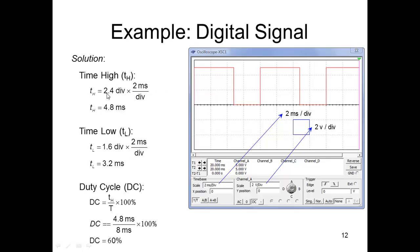Alright, time high. So 2.4 division, see, there would be, and that's going to work out to be 4.8 milliseconds. The time low then is going to be 8 minus 4.8, 3.2.